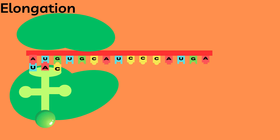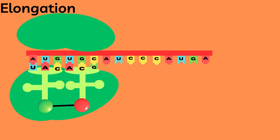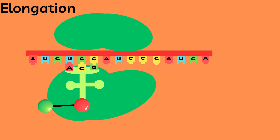Elongation starts when a second tRNA binds to the mRNA on the right side of the first, bringing with it the next amino acid, which binds to the first amino acid through a peptide bond. Then the first tRNA is ejected from the ribosome and the ribosome shifts one codon to the right. Now the next tRNA can bind on the right.